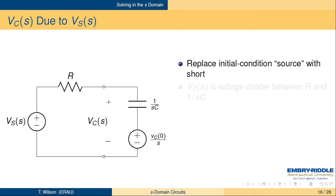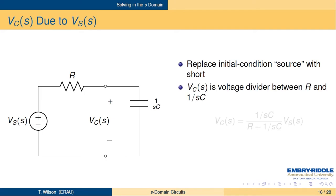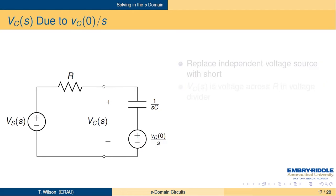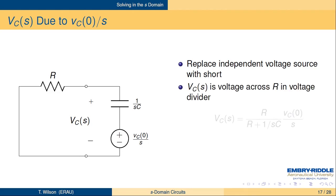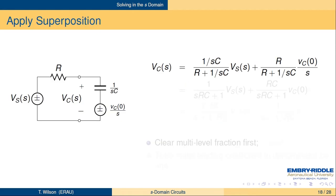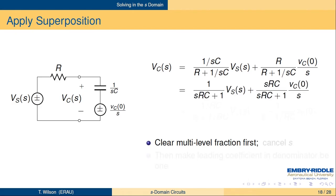Using superposition, we've got a voltage source. We replace the initial condition source with a short and find the capacitor voltage due to the source V of S. That's just by voltage divider between one over SC and R: one over SC over R plus one over SC, times the source VS of S. To find the capacitor voltage due to the initial condition source, we short out the independent source. Now we do a voltage divider and notice that cap VC of S is actually the voltage across R: R over R plus one over SC, times the source strength VC of zero over S. We can cancel the S terms that appear in both numerator and denominator on the right-hand term.